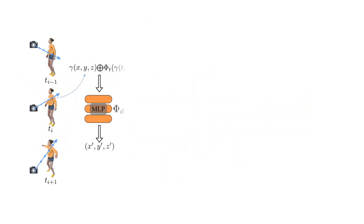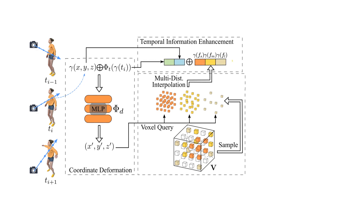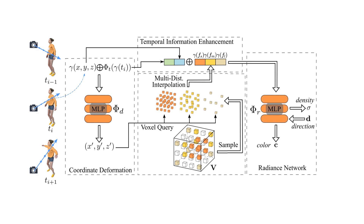We first encode the time information by a coordinate deformation, which maps points into a canonical space. The mapped points are used for voxel querying and interpolation. Then, the temporal information is enhanced by concatenating time and coordinate embeddings with voxel features, which are then all fed into the radiance network to produce colors and densities.